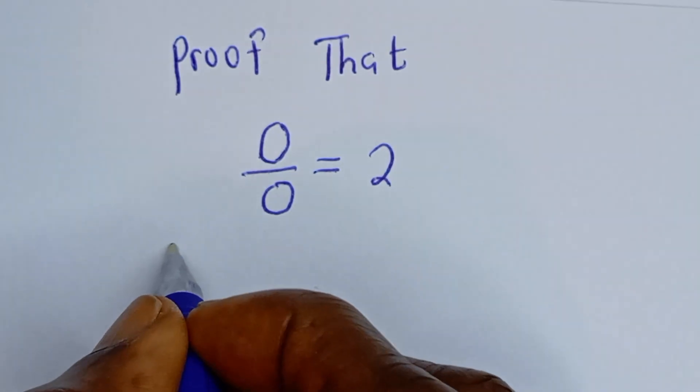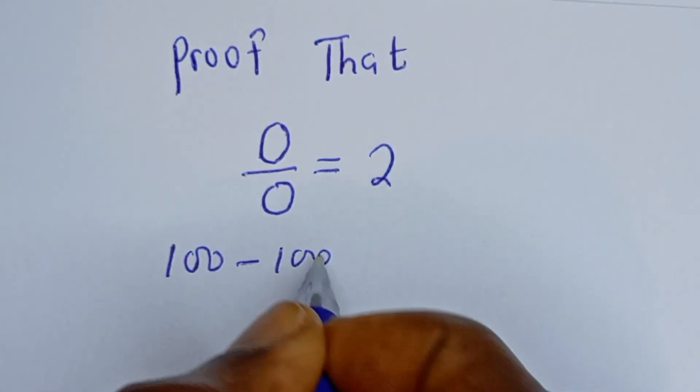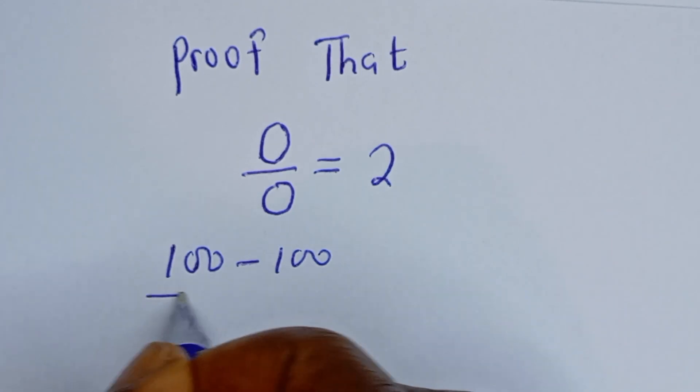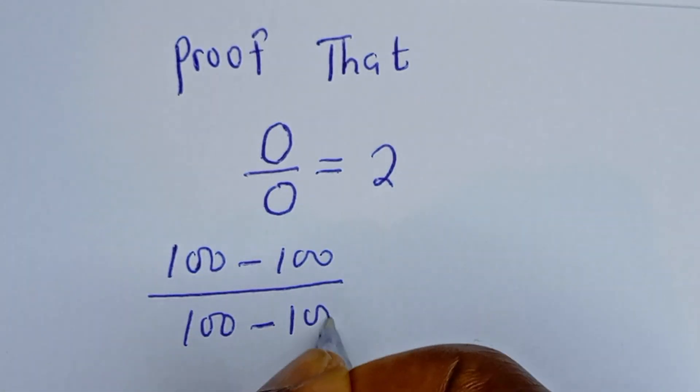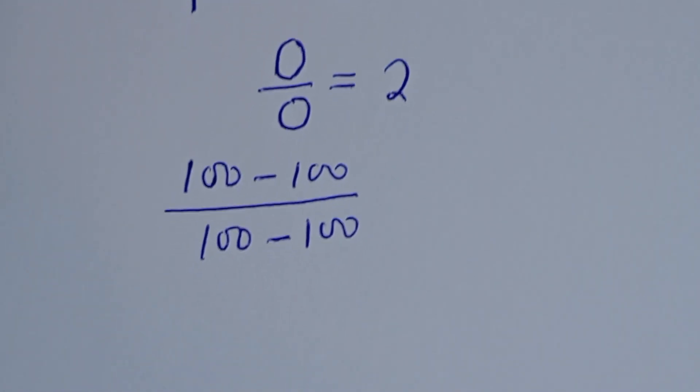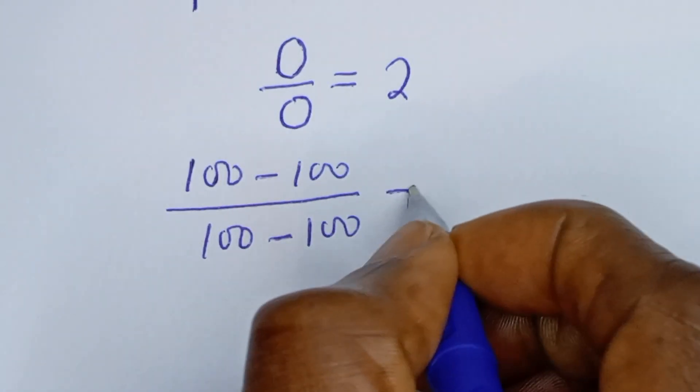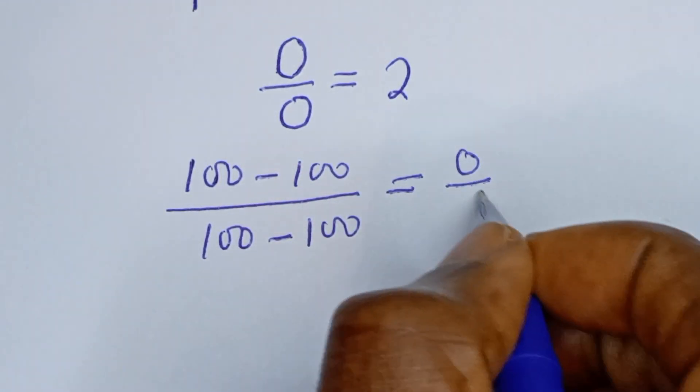If you have 100 minus 100, this is same thing as 0. Let's divide it by 100 minus 100. This is equal to 0 divided by 0.